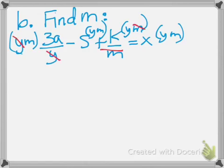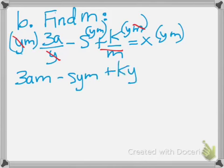We'll cancel. Then, we multiply, we get 3am minus sym plus ky equals xym.